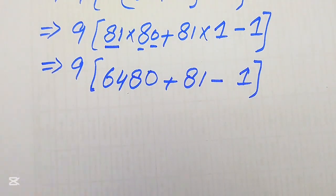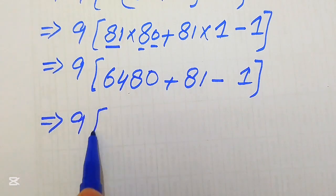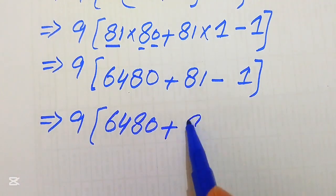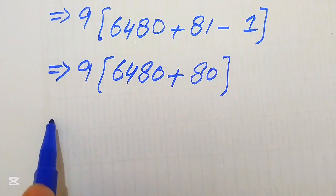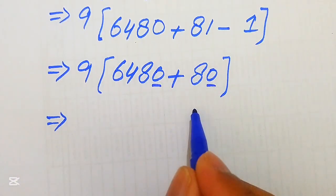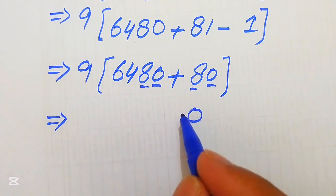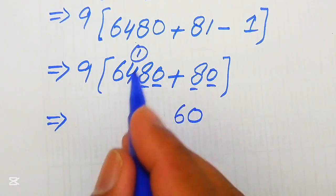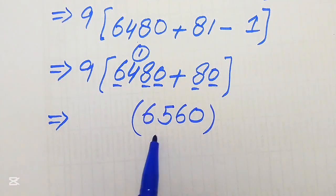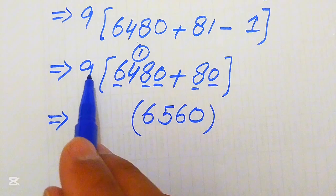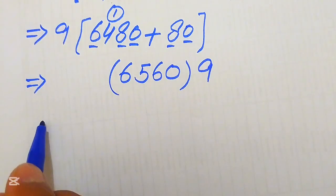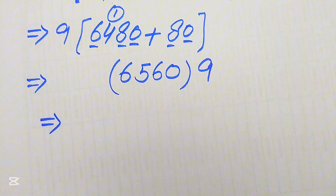We sum up all of these values. Subtracting the two values gives 6480, plus 80. Adding: 0 plus 0 equals 0, 8 plus 8 equals 16 so we write 6 and carry 1, then 4 plus 1 equals 5, giving 6. Adding these two values gives 6560. We then write 9 on the right-hand side of this term to multiply.